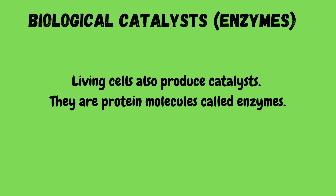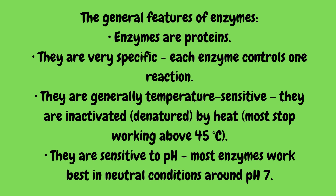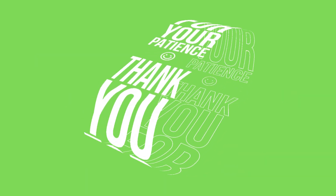What are biological catalysts or enzymes? Living cells also produce catalysts — they are protein molecules called enzymes. The general features of enzymes are: they are proteins; they are very specific — each enzyme controls one reaction; they are generally temperature sensitive and are inactivated or denatured by heat. Most stop working above 45°C. They are also sensitive to pH — most enzymes work best in neutral conditions around pH 7. That's all — thank you so much for watching my video.